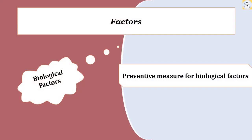The third factor is biological factors like microorganisms, insects and rodents. The preventive measure for biological factors includes avoiding food and drink inside the library. Good housekeeping and care of optimum storage is necessary to control the propagation of insects.